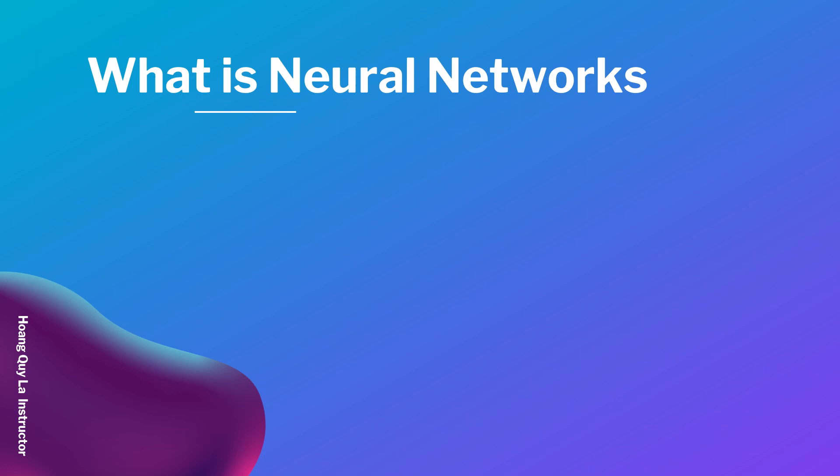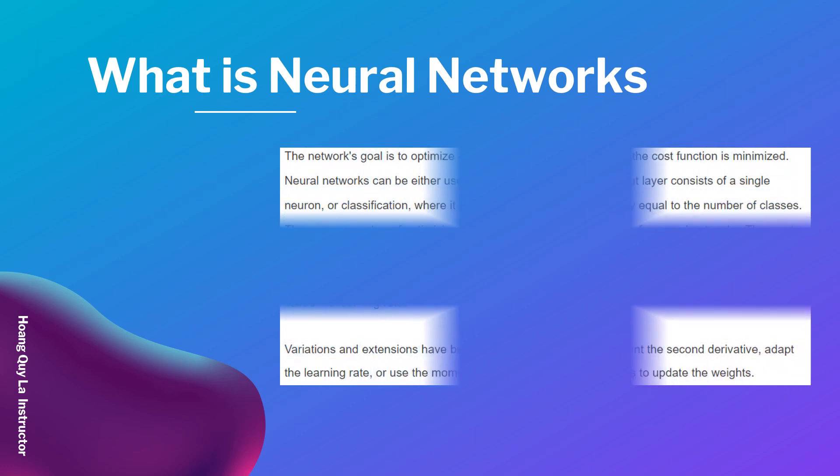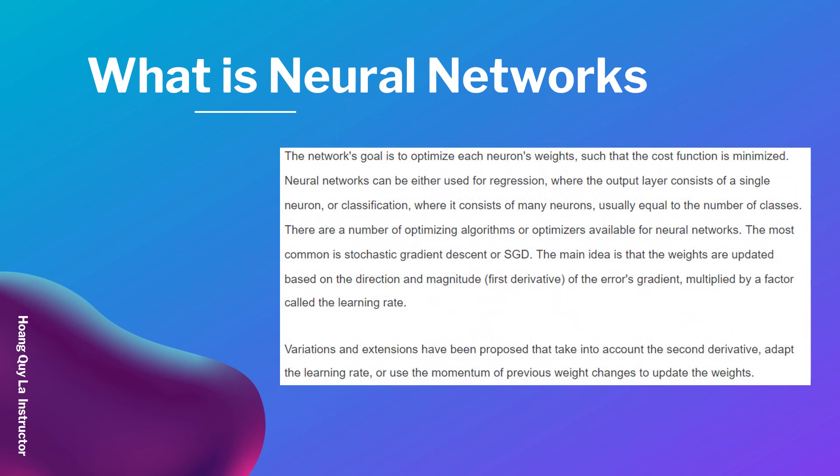The goal of the neural network is to optimize its neuron weights such that the cost function is minimized. Neural networks can be used for regression, where the output layer consists of a single neuron, or for classification, where it consists of many neurons.